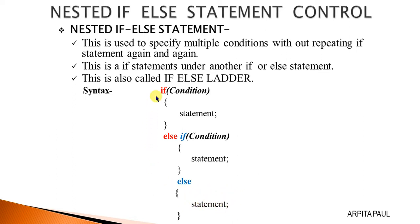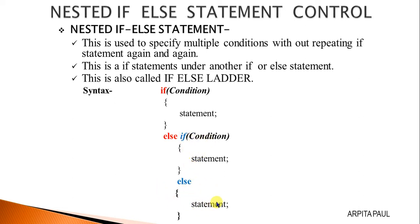By the color coding you can understand that this else part belongs to this if statement. If this condition is not satisfied, it will go to this else statement, and after that it will check the next condition. If that condition is satisfied, it will execute this statement; if it is false, it will go to this else part and execute that statement.